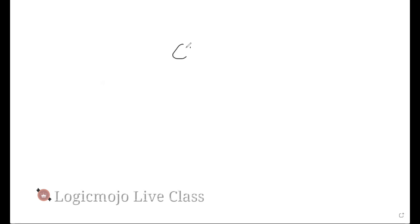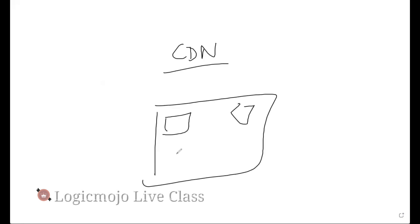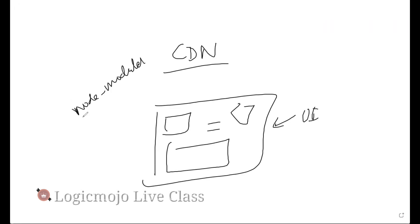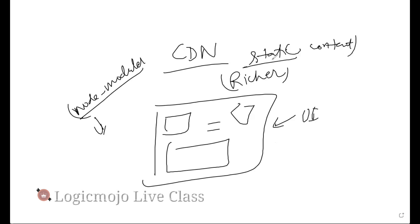Coming back to CDN — when you look at a UI, you see GIFs, pictures, videos, and a lot of content. Modern UIs also bring in a lot of UI libraries. There are jokes about node_modules and how many modules get downloaded. Your UI is becoming richer day by day and needs a lot of static content — content that is not dynamic in nature. This includes JavaScript libraries, images, video files, GIF files — everything that constitutes and renders your UI.